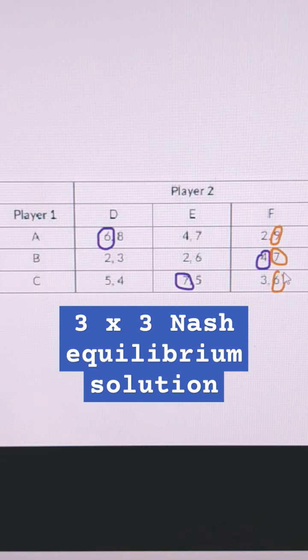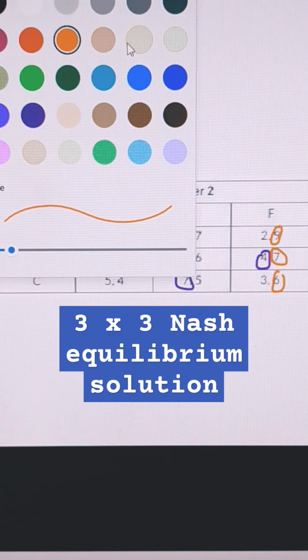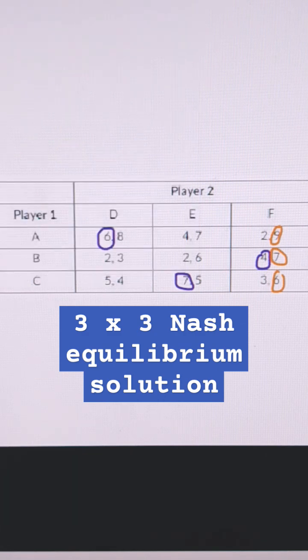And then right here, that is a 6. So Player 2 actually has what's called a dominant strategy. They're going to do choice F regardless of what Player 1 does. But the Nash equilibrium is right here.